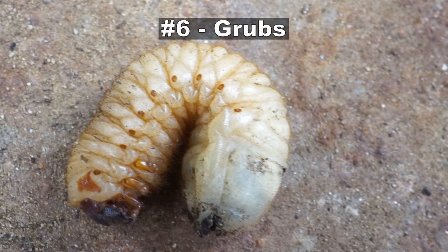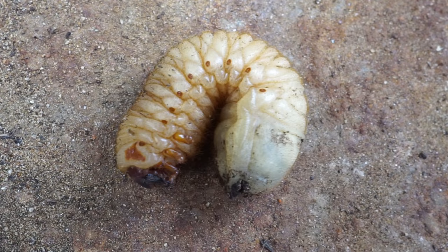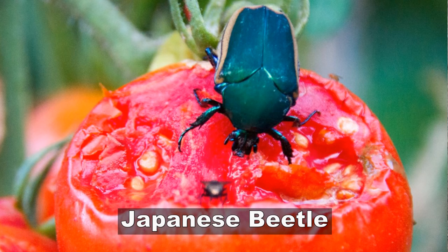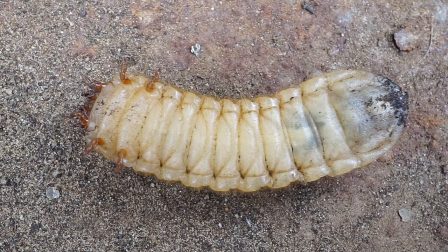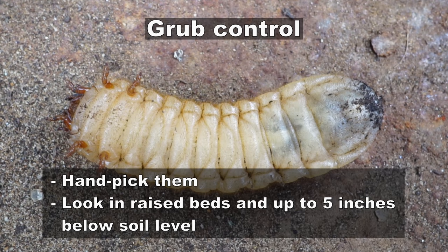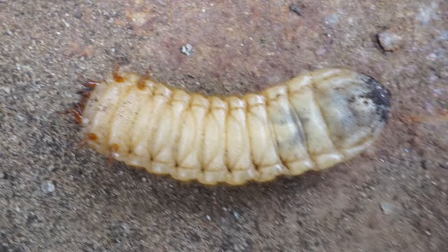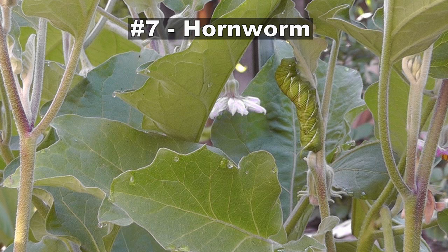You can generally find grubs when you are digging your raised beds or your soil. They cause a lot of damage by eating your plant roots, and when these form into their adult flies — the Japanese beetle — the Japanese beetles will cause even more damage. So just hand pick them and throw them.